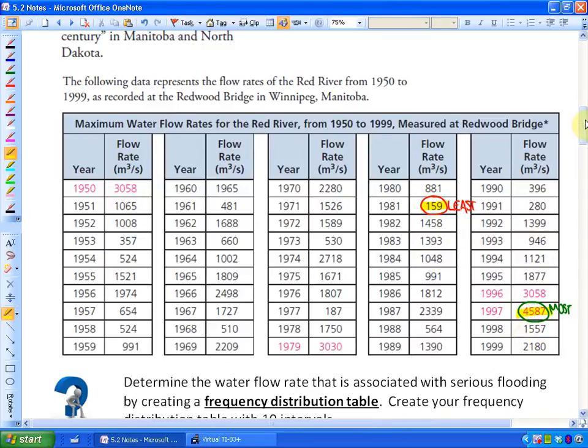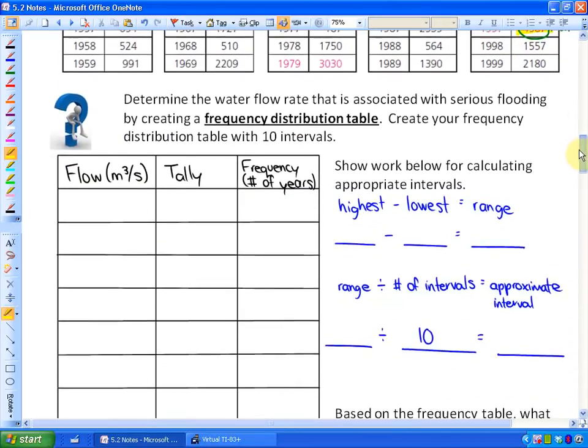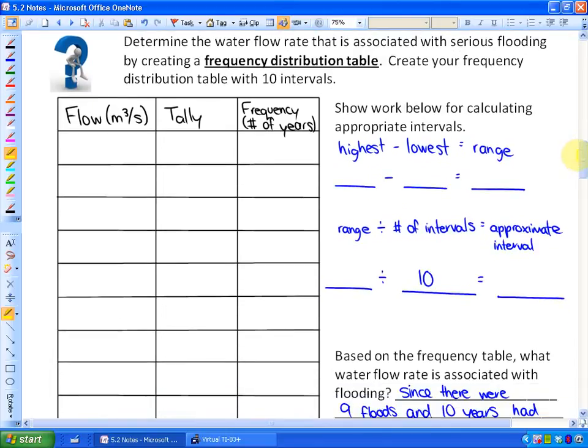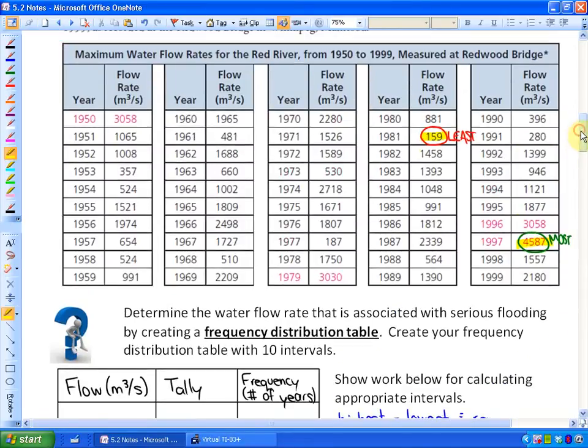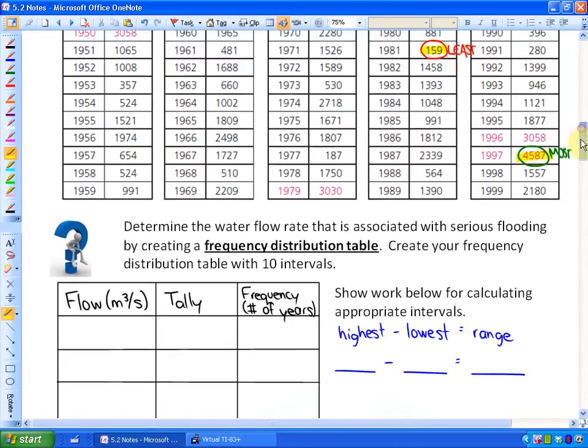What I've done here is indicated that the least water flow was in 1981 at 159 meters cubed per second, and the most water flow or the biggest flood was 4,587 meters cubed per second. Why is that important? Well, we're going to have to organize this data. So we have to know what intervals to use in order to create a bar graph or a line graph. So if we have the least and the most, this is going to be useful. It says, determine the water flow rate associated with serious flooding by creating a frequency distribution table. This is called a frequency distribution table. And create your frequency distribution table with 10 intervals.